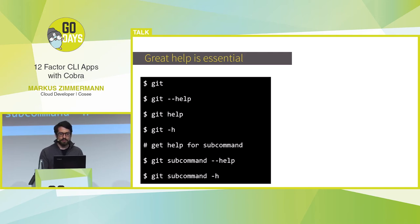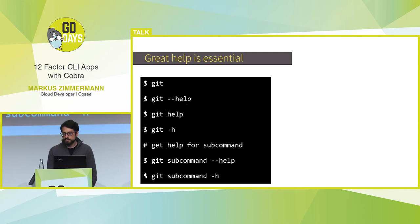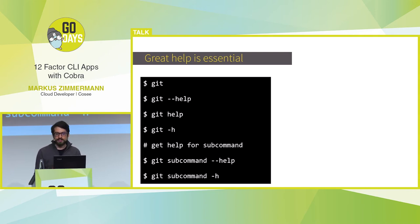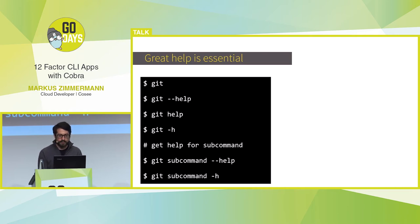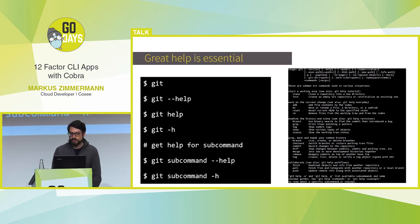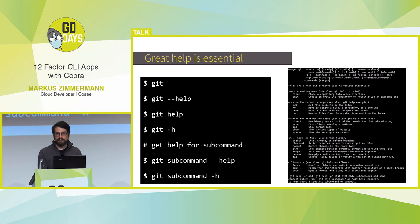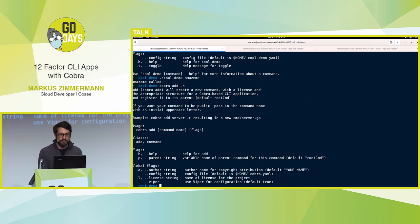The first thing — which I kind of already showed — is that it's really important to have good help. If you don't have that, your users will have a really hard time working with your CLI. There are many different ways to get help, and since every CLI has its own way, you should try to support every way. Out of the box, --help and -h are supported. A good example is Git, where you can see all commands with really detailed descriptions and help for each sub-command.